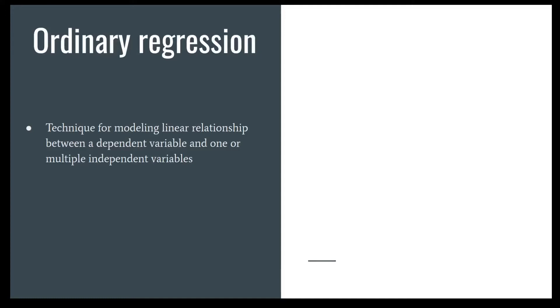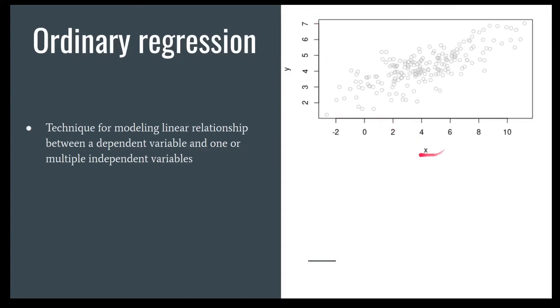Generalized linear models, as the name very aptly describes, are a generalization of the classic ordinary linear models that you know. To describe what the generalization means, let's start with a quick recap of what ordinary regression was all about. This is a technique for modeling the linear relation between a dependent variable and one or multiple independent variables. If you have data with an x-independent variable and a y-dependent variable and you see some relation, you can model it. We have an intercept and a coefficient for x which makes a slope — that green line is basically a prediction. If the x value is 4, then y is expected to be something along those lines.